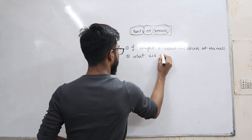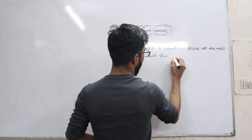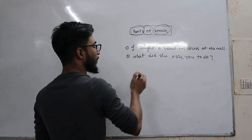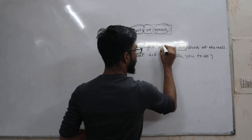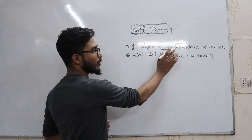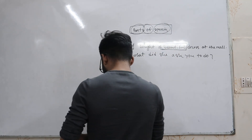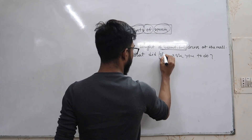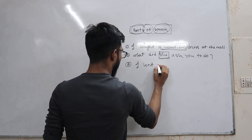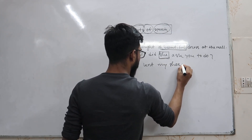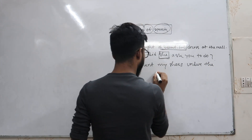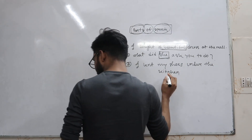Number two: What did she ask you to do? Number three: I lent my shoes under the kitchen table.